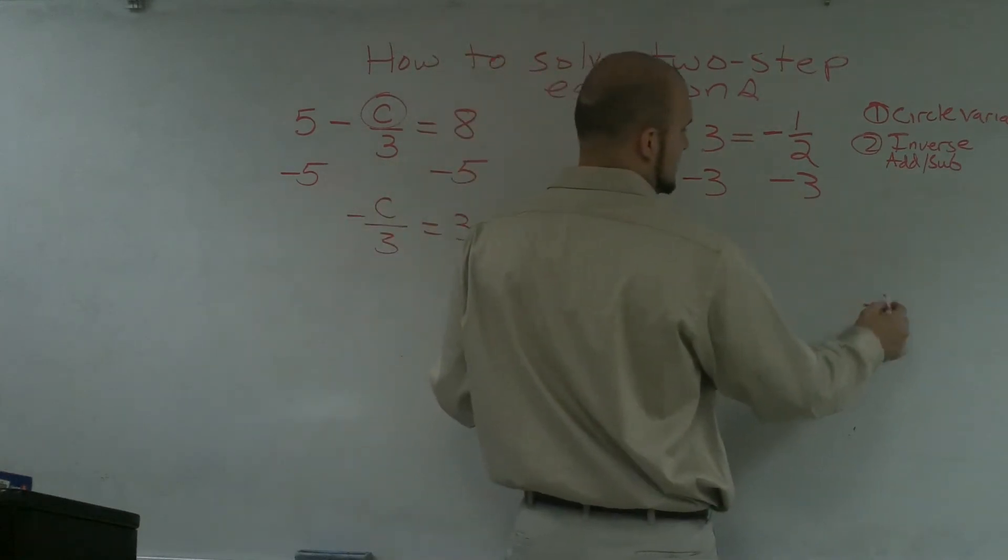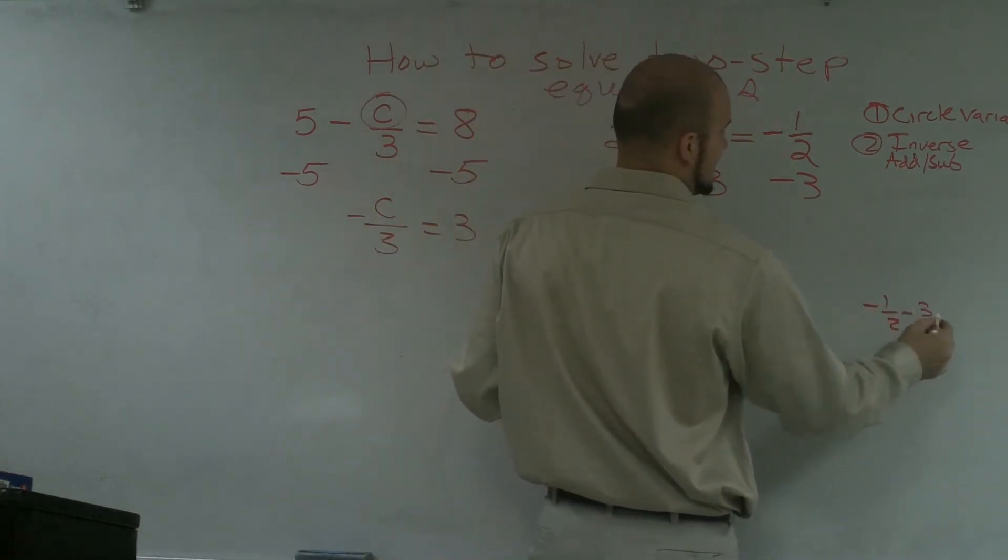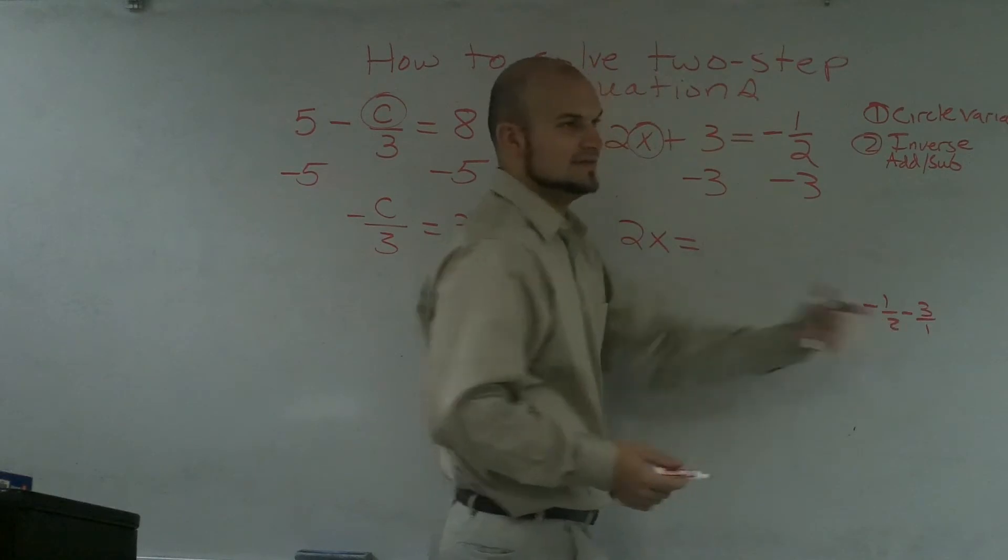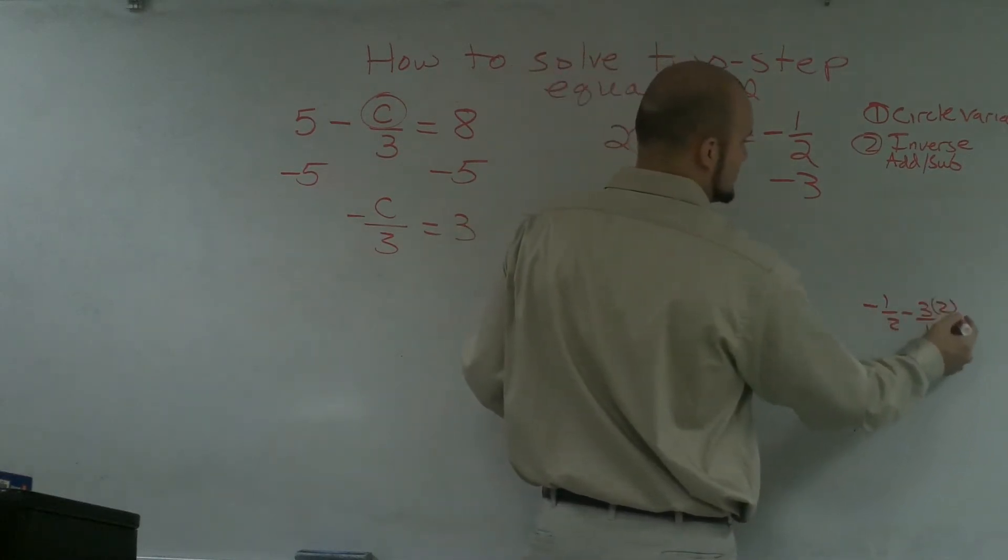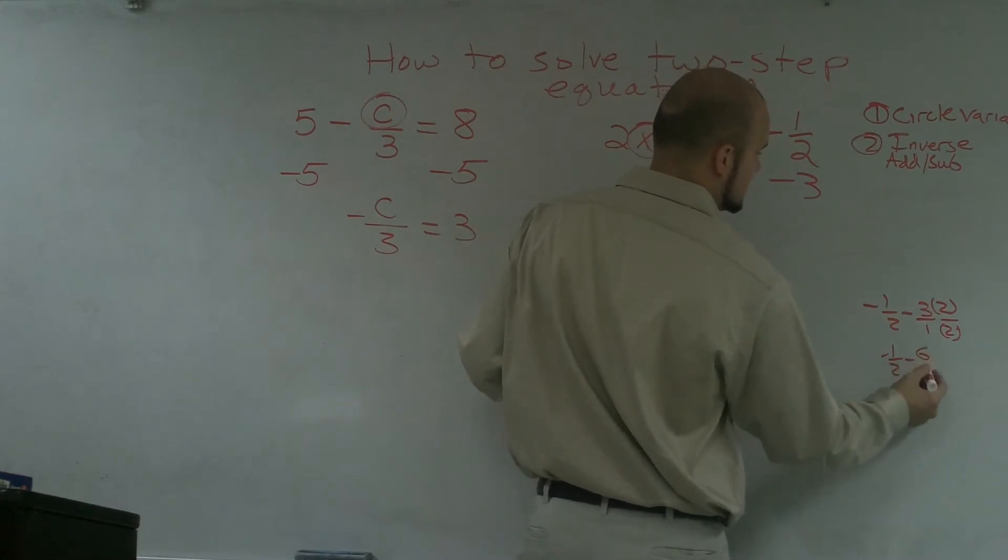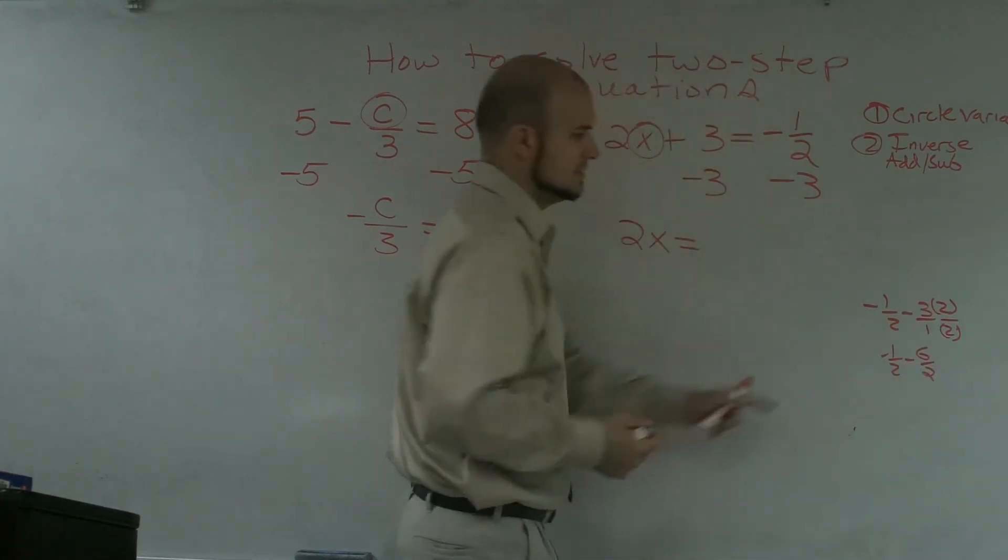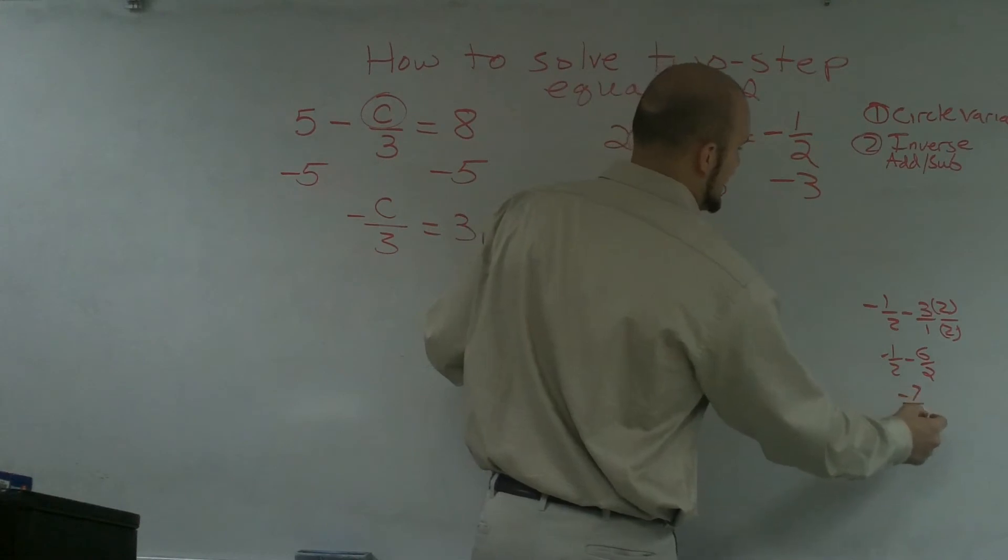we'll do it right here. Negative 1 half minus 3. I put that over 1. They do not have the same common denominator. So I multiply it by 2 over 2, negative 1 half minus 6 over 2, which becomes a negative 7 halves.